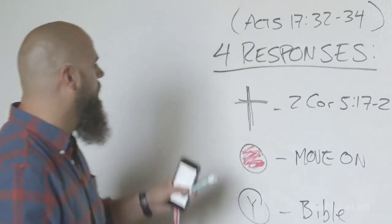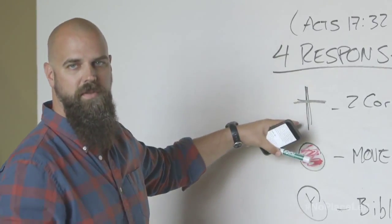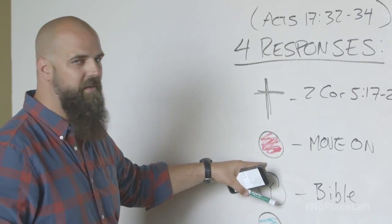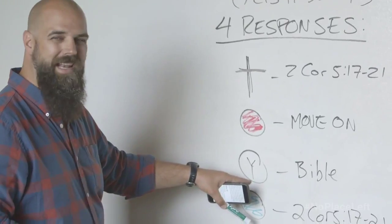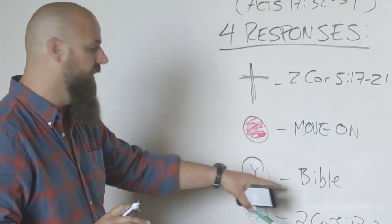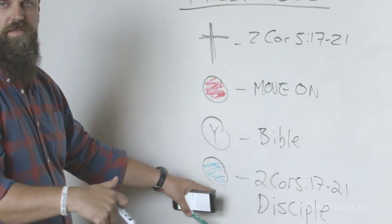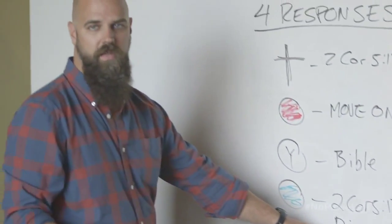As you go out and engage people with the gospel, you're going to see these four responses: Believers - offer to train them. Red light people - love them, lovingly and prayerfully move on, continue looking for the person of peace. Yellow light - not interested in following Jesus yet, but invite them to discover the Bible. Green light - they're ready to follow Jesus, cast vision for them, begin to train them and disciple them to obey Jesus, including the Great Commission.